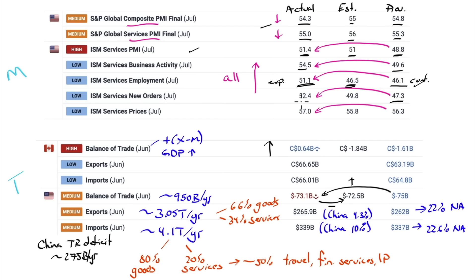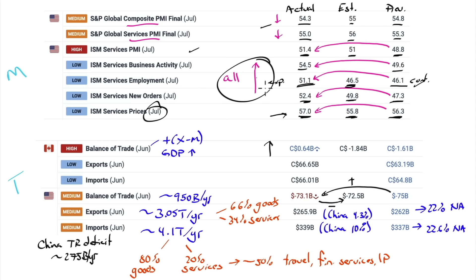Services prices paid: 56.3 to 57 - remember this, because we have CPI coming up this week. We also have information from Manheim about used car prices for July. The services prices reading was expected to moderate to 55.8, so this was all good except for that prices component. Just keep this in mind because we're going to add it to more data.